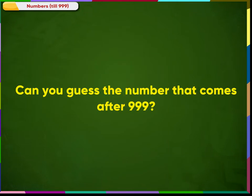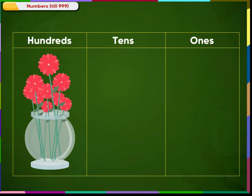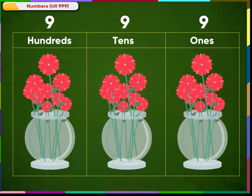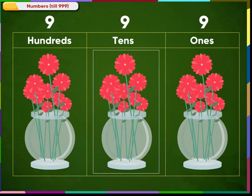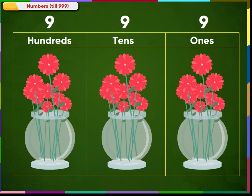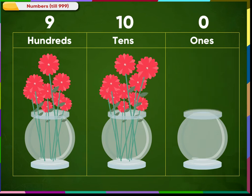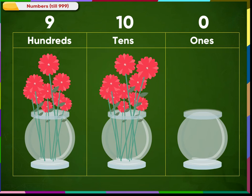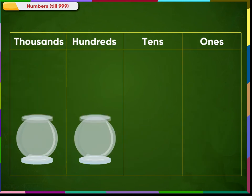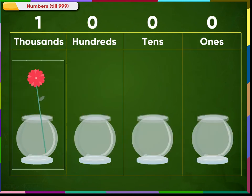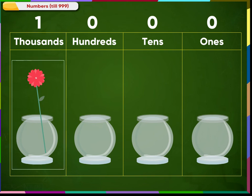Can you guess the number that comes after 999? Let us bring back the flower vases. The flower vase in the 1's place contains 9 flowers and the 10's flower vase also contains 9 flowers. If we put one more flower in the 1's vase, then there will be 10 flowers in all. This group of 10 flowers can be replaced by 1 flower in the 10's vase. Now, this 10's vase contains 10 flowers. This group of 10 flowers can be replaced by 1 flower in a new vase. This is a new place called the 1000's place. Thus, we get 1000 flowers.